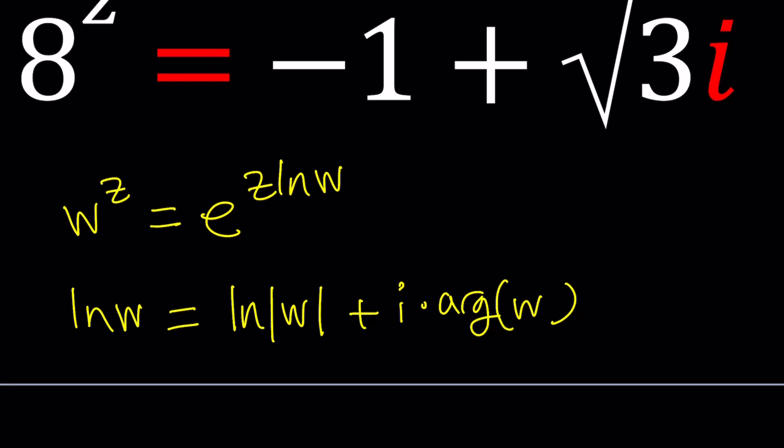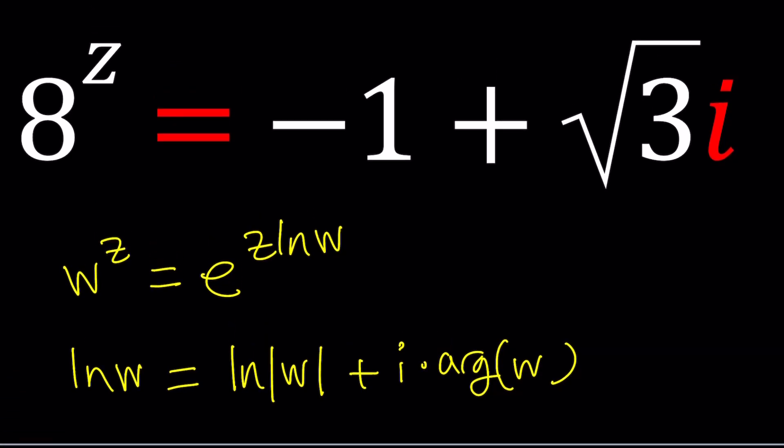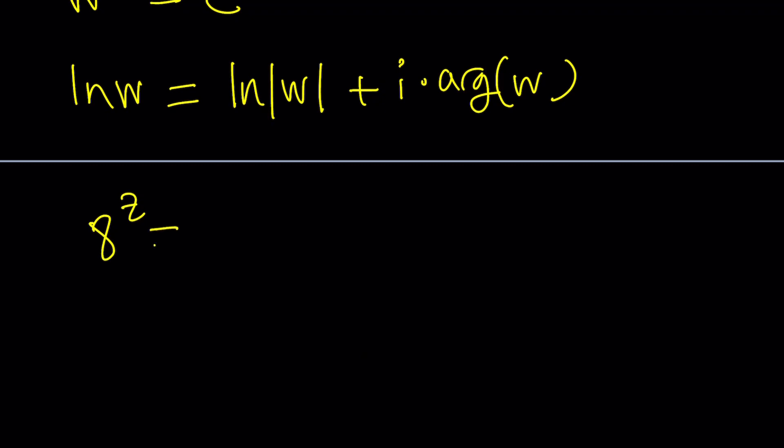So let's start by turning 8 to the z into an exponential. So 8 to the z can be written as e to the power z ln 8. Just remember that ln is going to act on the base and this is just going to be in the front because of the properties of logarithms.